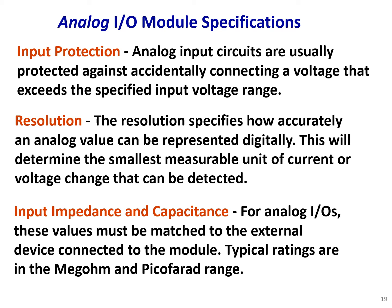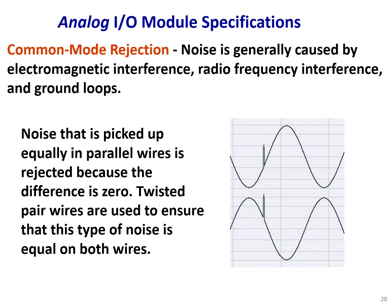Input impedance and capacitance are very important specifications for analog I/Os — these values must be matched to the external device connected to the module. Typical ratings are in the megaohm or picofarad range. Common mode rejection is another specification for analog I/O modules. Noise is generally caused by electromagnetic interference, radio frequency interference, and ground loops. Noise picked up equally on parallel wires is rejected because the difference is zero, and twisted pair wires are used to ensure that this type of noise is equal on both wires, allowing it to be eliminated.